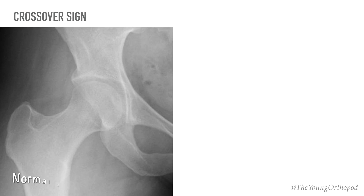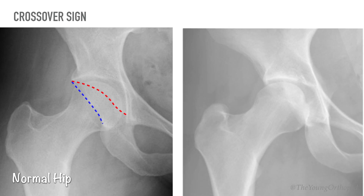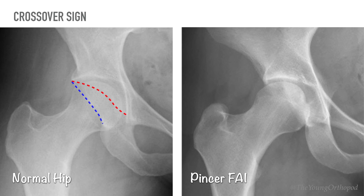On an AP X-ray, in the normal hip the anterior wall of the acetabulum is superior to the posterior wall. However, in pincer impingement, the anterior wall appears inferior to the posterior wall, giving a figure-of-eight appearance also known as the crossover sign. This indicates acetabular retroversion with anterior over-coverage of the femoral head.